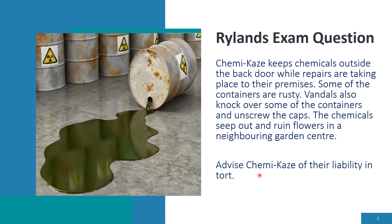Notice that the question itself doesn't tell you that you need to apply the law on Rylands and Fletcher. Sometimes it will tell you in the exam; other times it won't. So hopefully from looking at these facts, you'd have deduced that we've got an escape of something potentially dangerous onto neighbouring land. That certainly looks like Rylands and Fletcher.